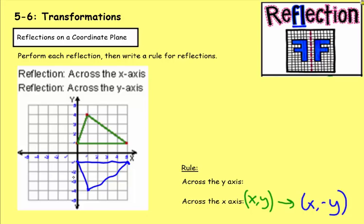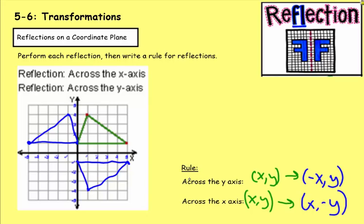Now let's reflect across the y-axis, which runs up and down. A point five away from the y-axis goes to five away on the other side. A point one away stays one away. A point on the axis stays on the axis. Connecting the points gives the reflection. The rule: x becomes negative x, and y stays the same.